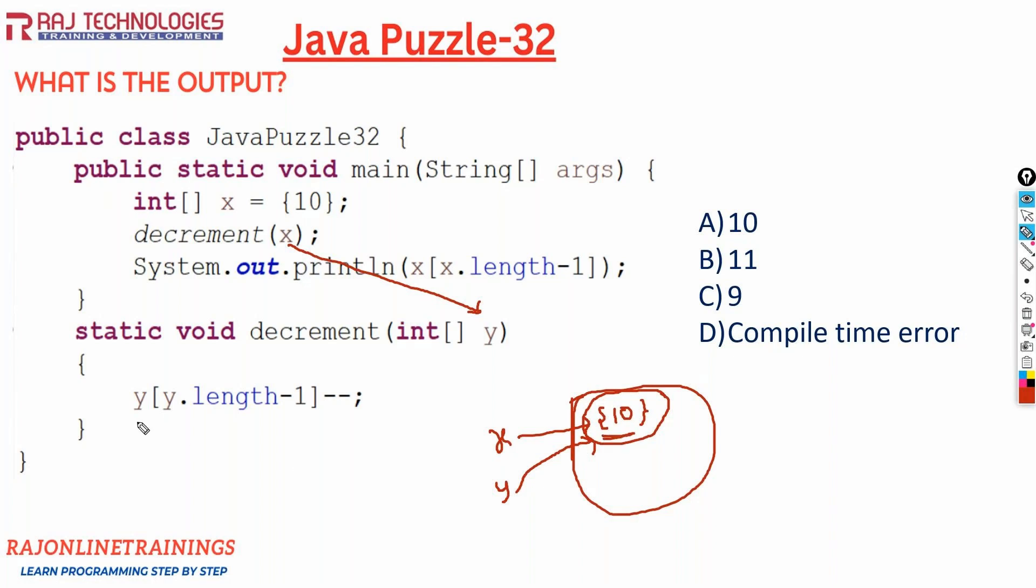Now when you are writing here, y of y dot length, what is y dot length? The size of the array is only one element, so 1 minus 1 will become y of 0. We are decrementing the value of y of 0. So this value will become what now? 10 minus minus. This memory value will be replaced with 9. So the element present in your array is now 9.